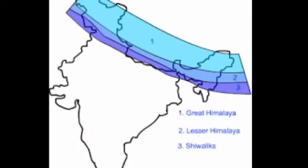The second sub-division is the Great Himalayas. The range lying to the south of the Trans-Himalayas is the northernmost of all the Himalayan ranges and the most continuous mountain range in the world. The Lesser Himalayas run almost parallel to the Great Himalayas in the north and the Shivaliks in the south.